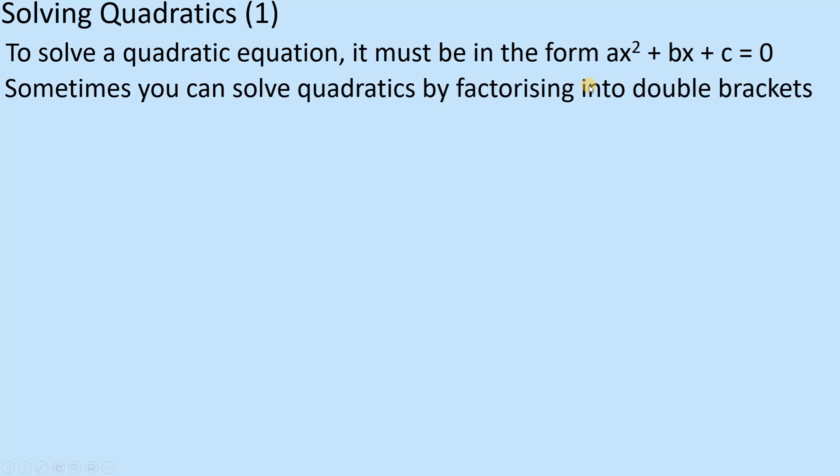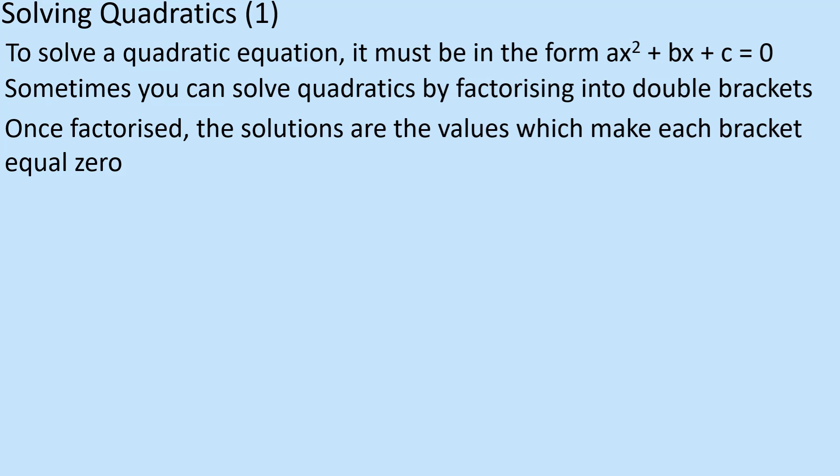So what that means essentially, because you've got something x squared, something x, and then a number, is that it means to go into what we call a double bracket. So once you've factorised it into that double bracket, then we look to see which of those brackets make it equal to zero, if not both. And that's going to give our two solutions.